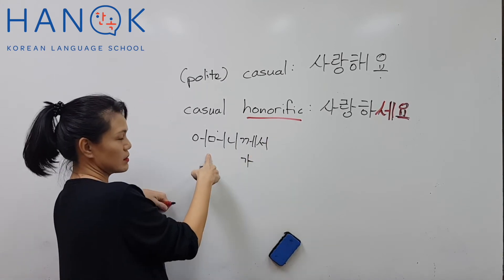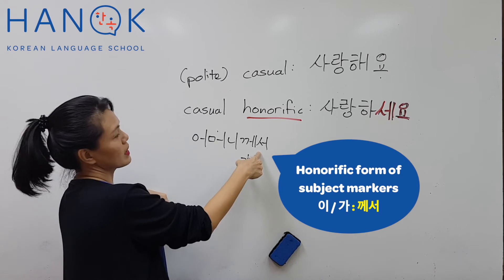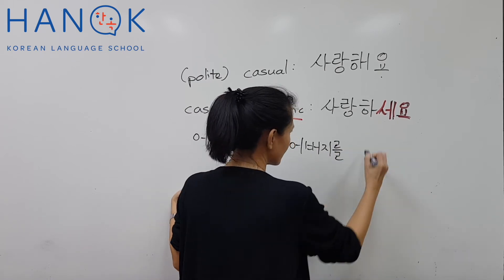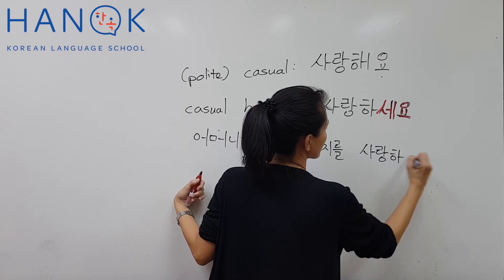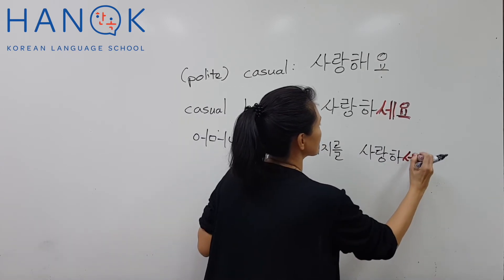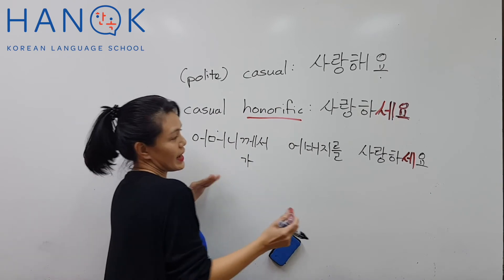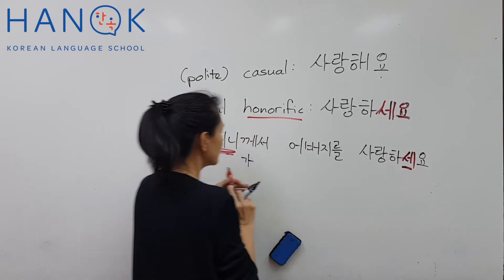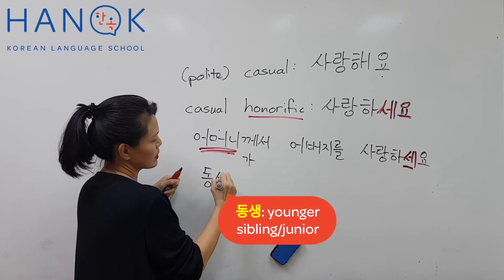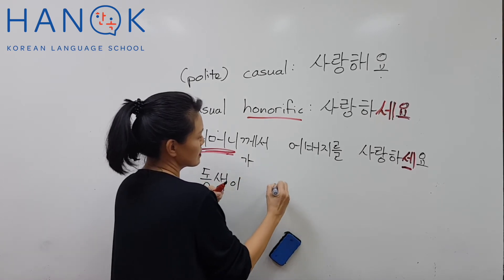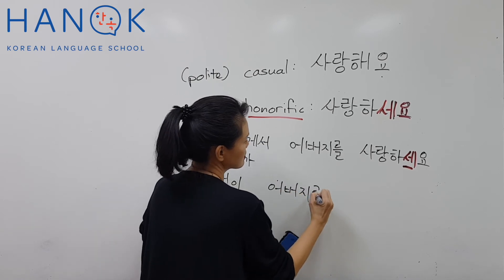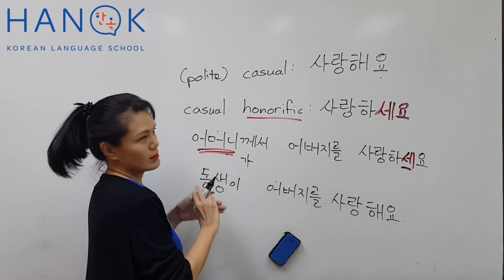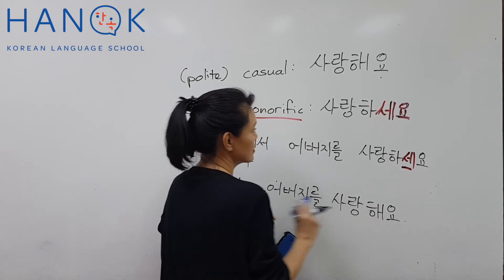Because you want to respect the mother, you use the honorific subject marker 께서: 어머니께서 아버지를 많이 사랑하세요. In this case, the mother is the one doing the action of loving father, so you use 하세요 to show respect. But let's say you're talking about your 동생 — your younger sibling: 동생이 아버지를 사랑해요. In this case, you don't need to respect your 동생, so you just say 사랑해요. That's the difference.